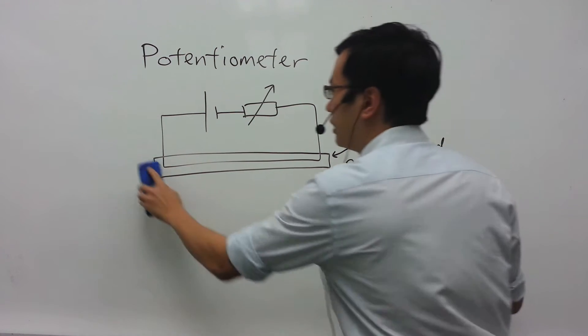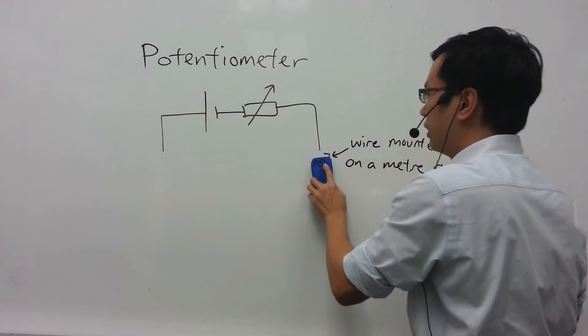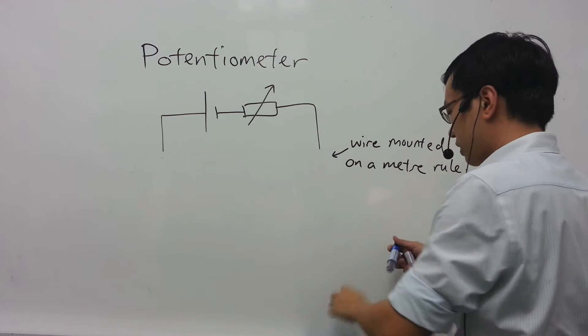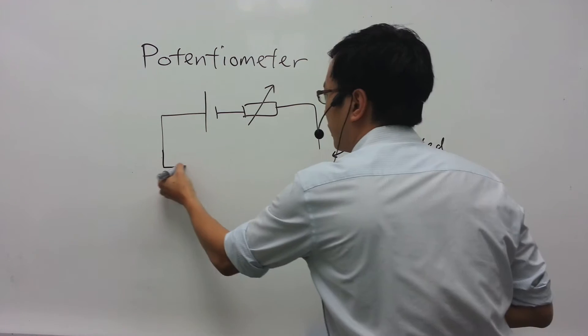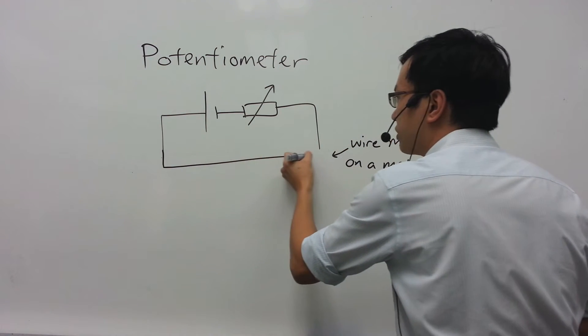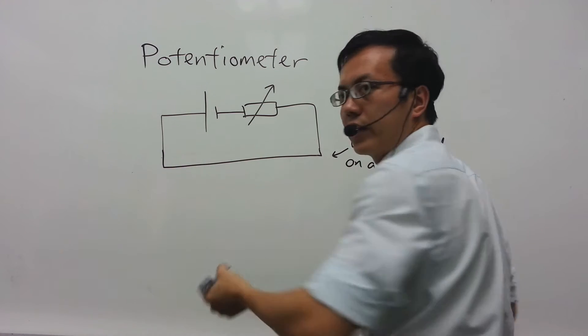Very often the potentiometer is not drawn with the meter ruler, so the wire is just represented by a single straight line.